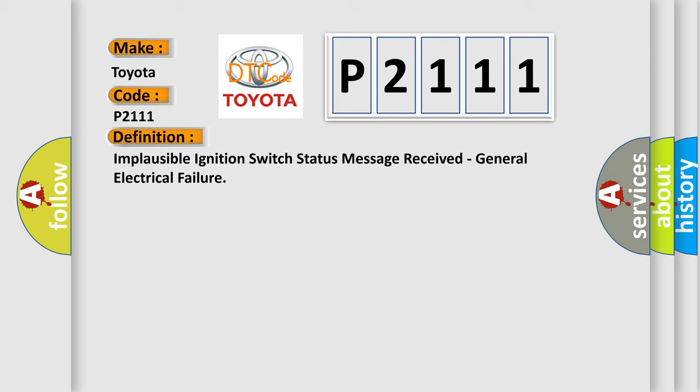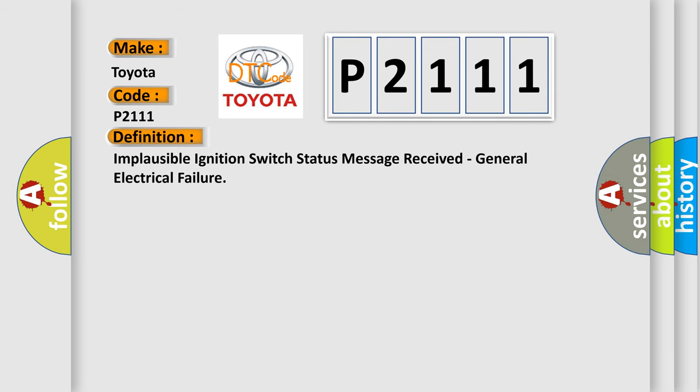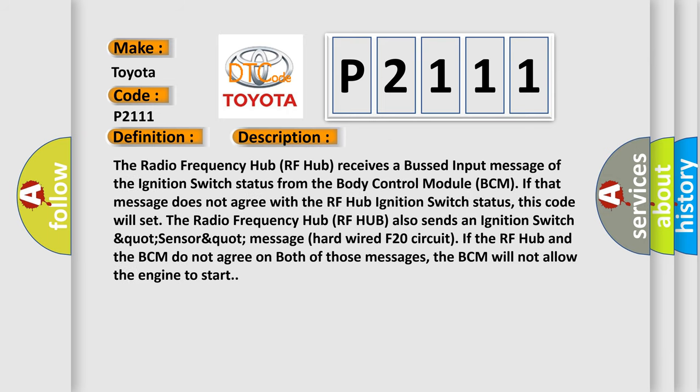The radio frequency hub (RF hub) receives a bus input message of the ignition switch status from the body control module (BCM). If that message does not agree with the RF hub ignition switch status, this code will be set in the radio frequency hub. The RF hub also sends an ignition switch quartz sensor message via a hardwired F20 circuit. If the RF hub and the BCM do not agree on both of those messages, the BCM will not allow the engine to start.